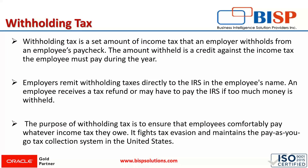In very simple language, withholding tax is not a tax itself but an advanced payment that is used for future tax liability. An employer remits withholding tax directly to the IRS in the employee's name. An employee receives a tax refund, or may have to pay the IRS if too much money is withheld — there is an option of reclaim or refund if that happens in future.